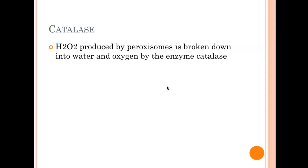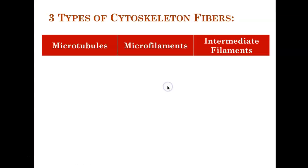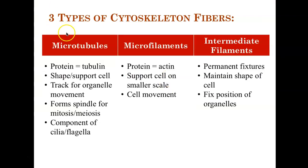Cytoskeleton is for support and motility. You have three parts: microtubules, microfilaments, and intermediate filaments. Microtubules are for the spindle of mitosis and meiosis and are the components of cilia and flagella. Microfilaments are for total cell movement — a lot of students thought cilia or flagella meant microfilaments, but microtubules make up cilia and flagella. Microfilaments help the cell move around inside. Intermediate filaments fix organelles in place. If you need to name a part of the cytoskeleton, always focus on microtubules — those are the ones asked about most often.